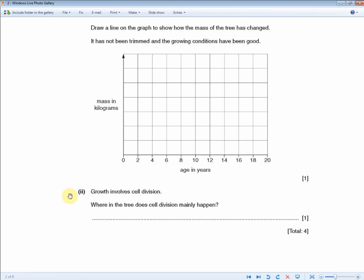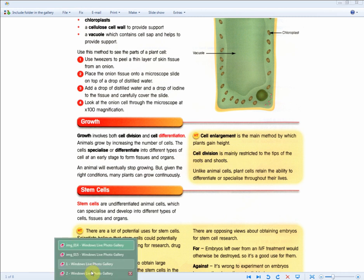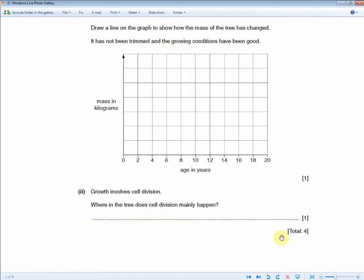So finally, for this exam question, growth involves cell division. Where in the tree does cell division mainly happen? So for one mark, they're asking you a higher tier material question, which basically the answer is cell division is mainly restricted to the tips of the roots and the shoots. And this one sentence is what you need to mention to get you one mark to give you a total of four out of four in less than a minute.